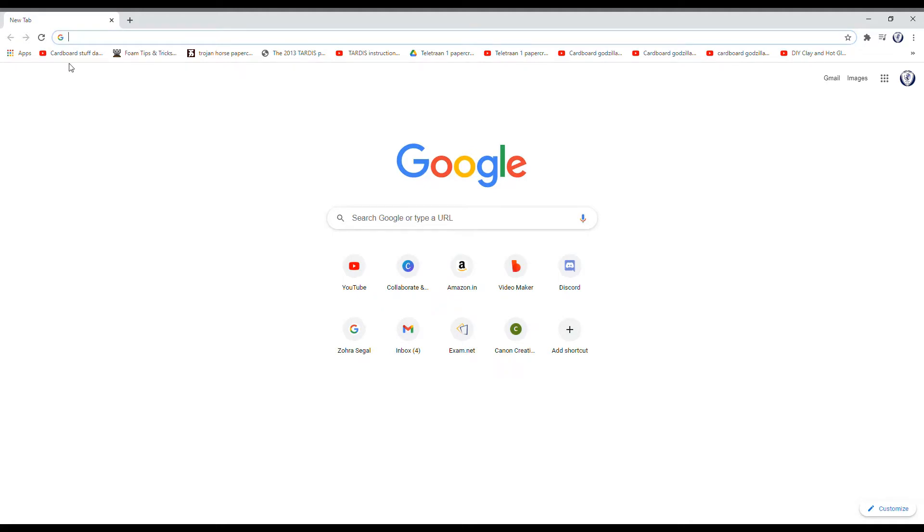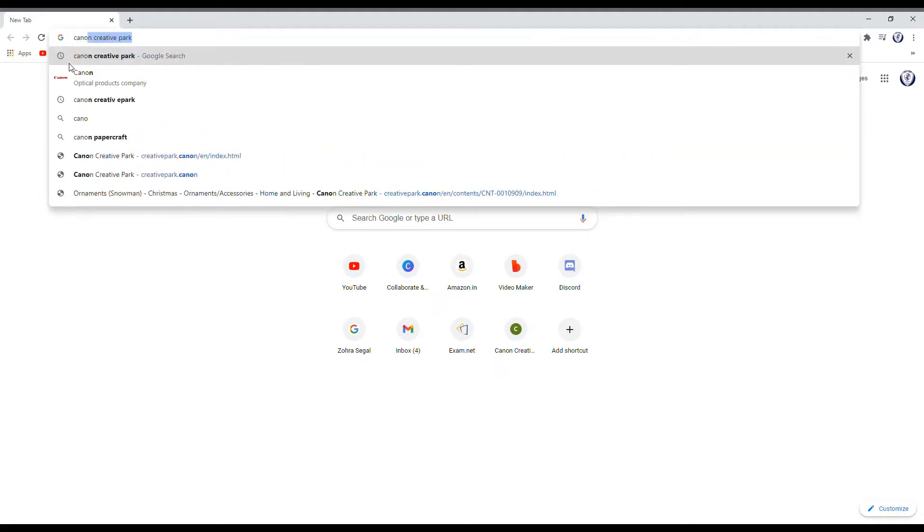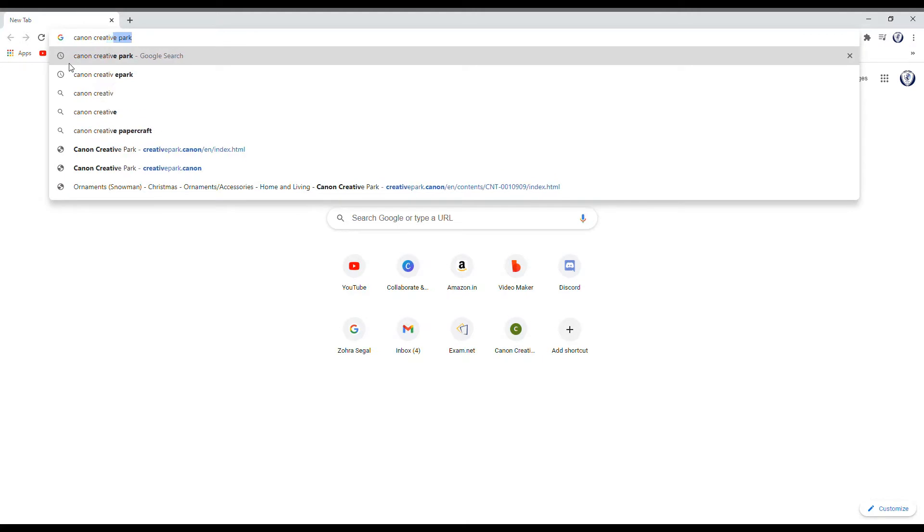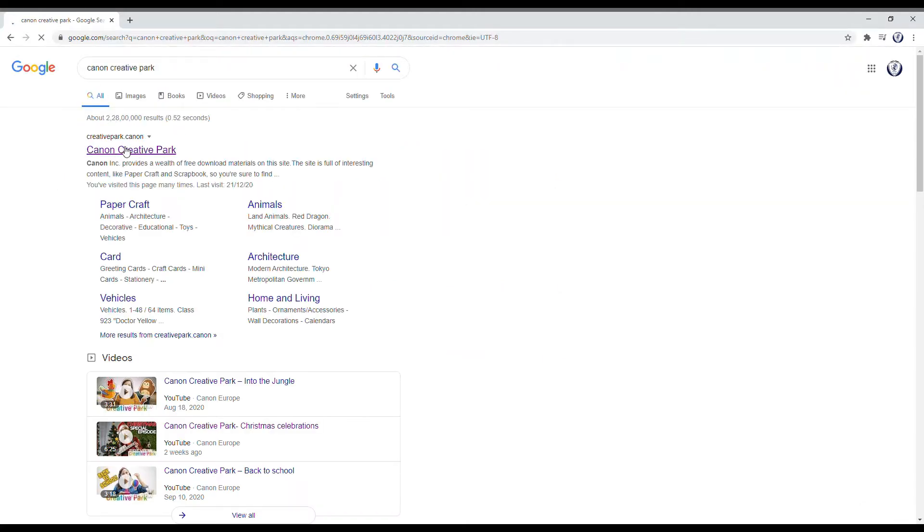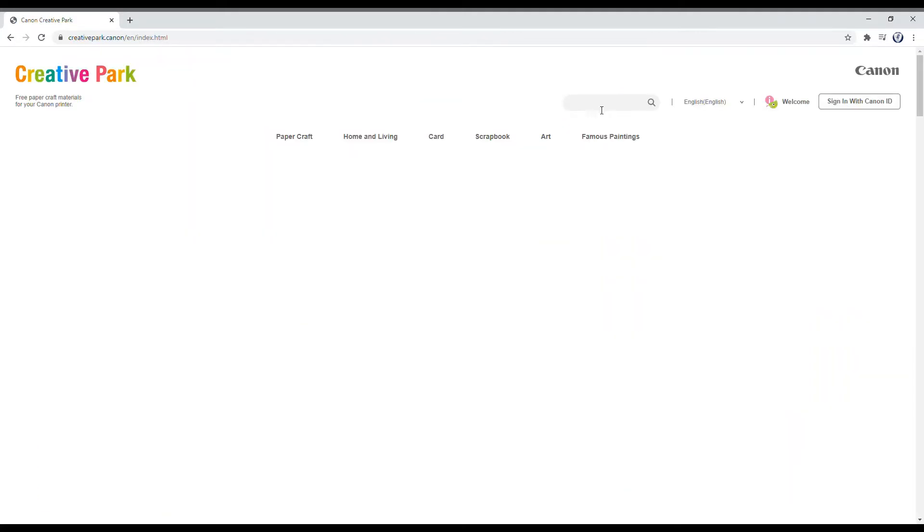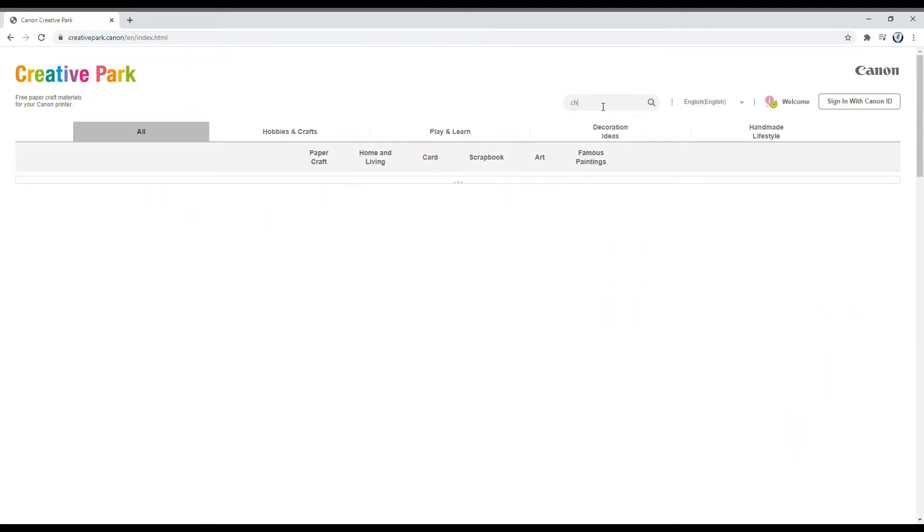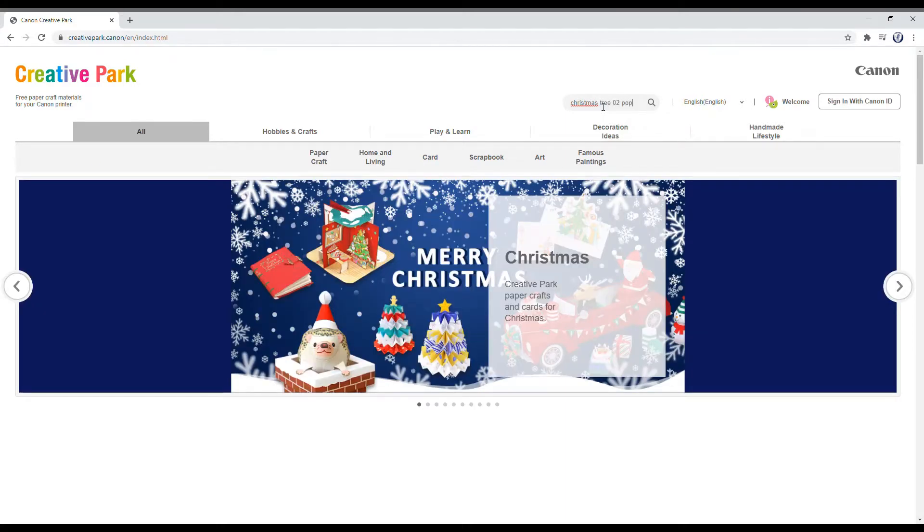Now, the first thing we're going to have to do is go to Canon Creative Park, go to the first link we see here and type here Christmas tree 02 pop-up card.